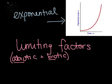So for our bacteria, it could be eventually they run out of space, which would be an abiotic factor. They could run out of the food source, which would be a biotic factor. So these limiting factors are really important.